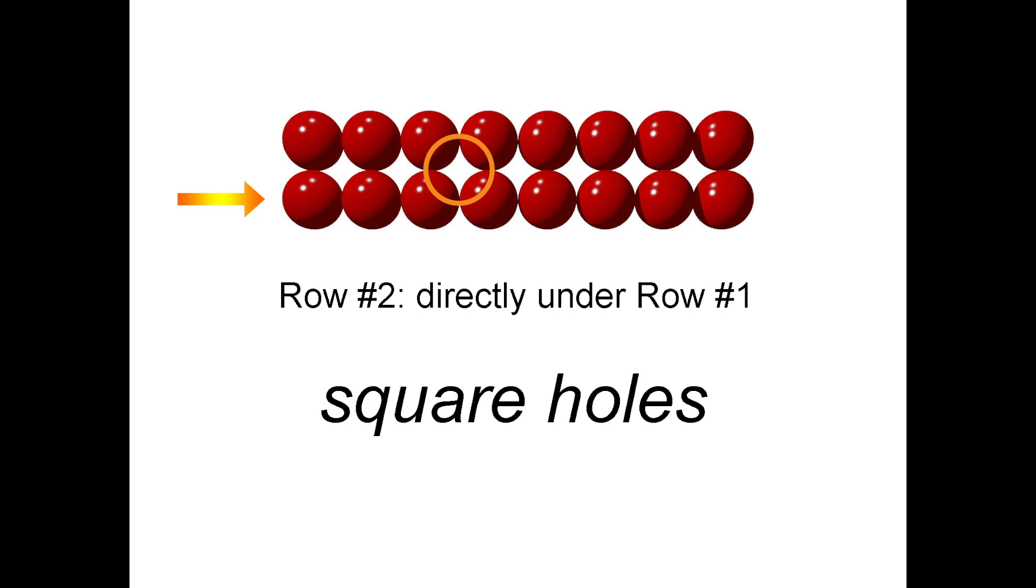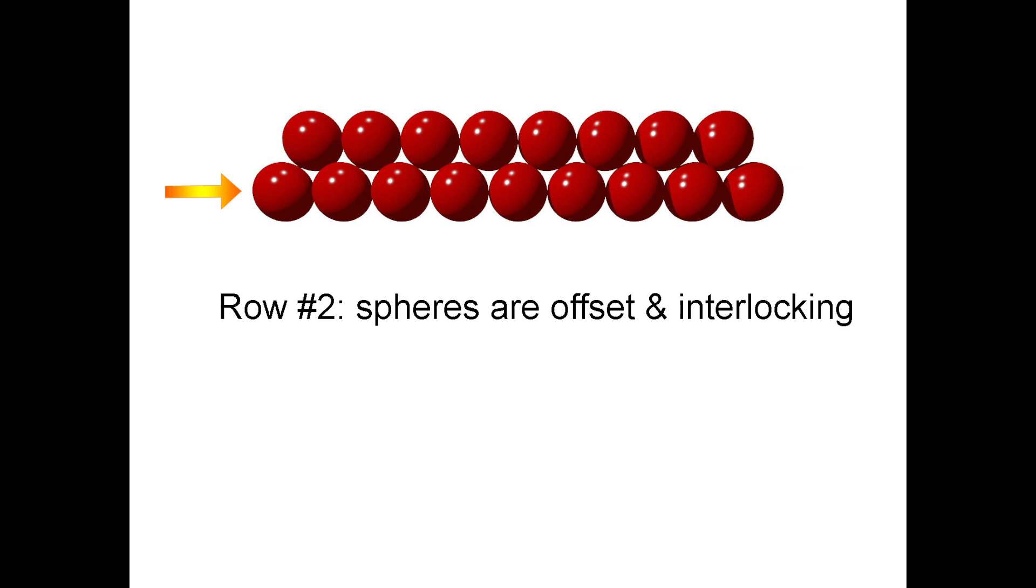There is a better way of placing the second row, a more space-efficient way. Each sphere in the second row occupies the indent created by two spheres sitting side by side in the first row. This uses significantly less space.